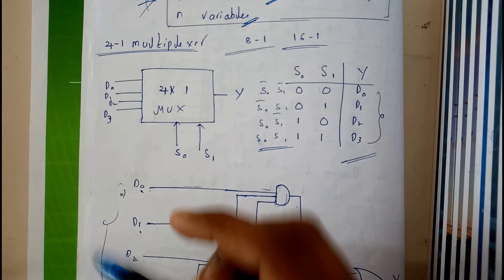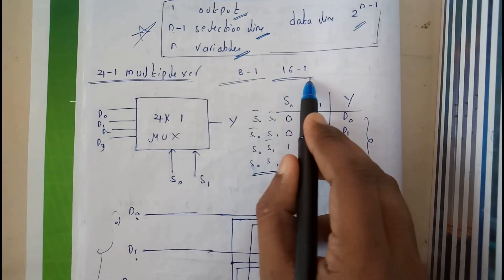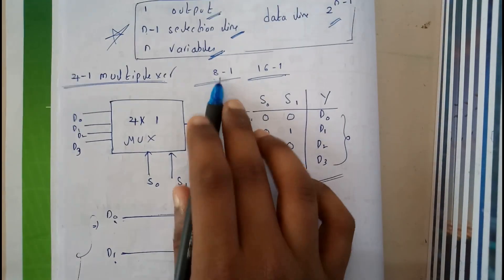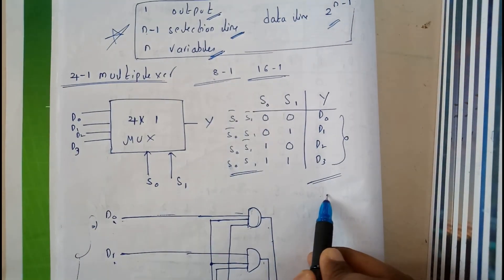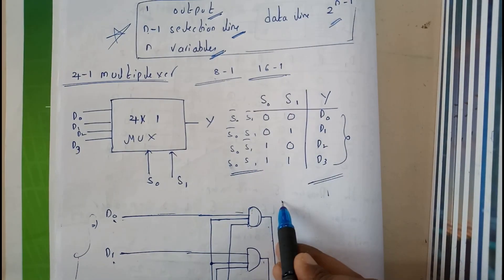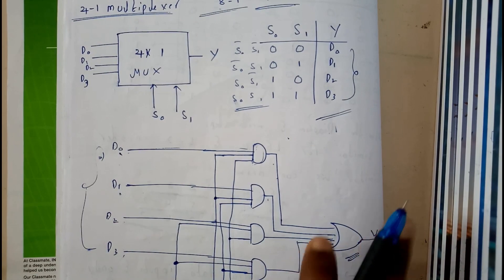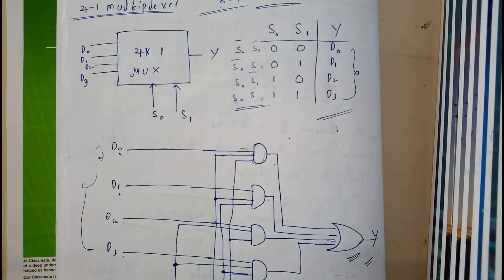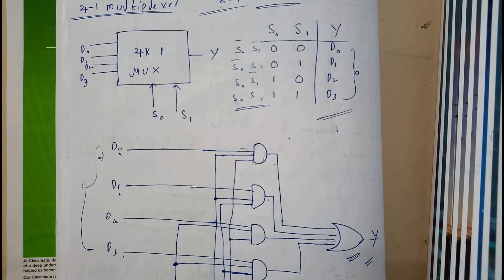Similarly try for 8-to-1 and 16-to-1 also. In 8-to-1 we'll be having d0 to d7, and we'll be having three selection lines with 8 combinations. We'll be drawing the same way but the diagram will be a bit larger. And 16-to-1 will be very complex in diagrammatical view. So I hope everyone is now clear with 4-to-1, 8-to-1, and 16-to-1.